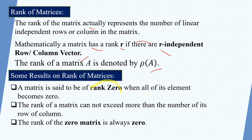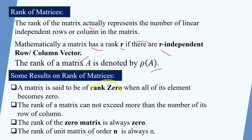The rank of the zero matrix is always zero, as stated earlier. The rank of a unit matrix of order n is always n. So if a unit matrix is of order 3, the rank is 3; if order 2, the rank is 2; and if the unit matrix is of order 10, then the rank is also 10.